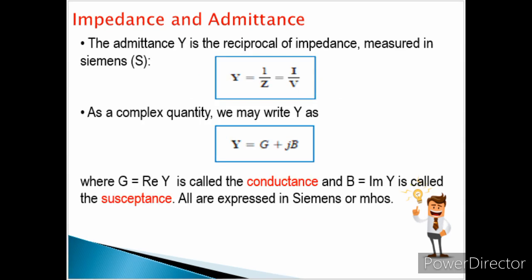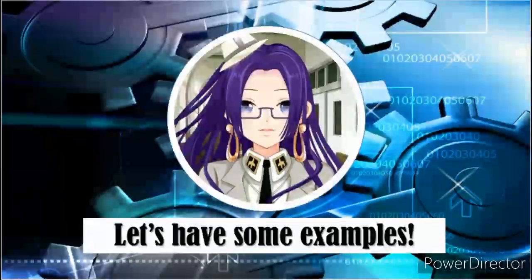Admittance is the reciprocal of impedance, measured in Siemens. As a complex quantity, Y = G + jB, where G is the conductance and B is the susceptance, both expressed in Siemens or mhos. Solving AC circuits is the same as solving DC circuits, except we deal with complex numbers. Methods like mesh analysis, nodal analysis, KVL, and KCL all apply here.